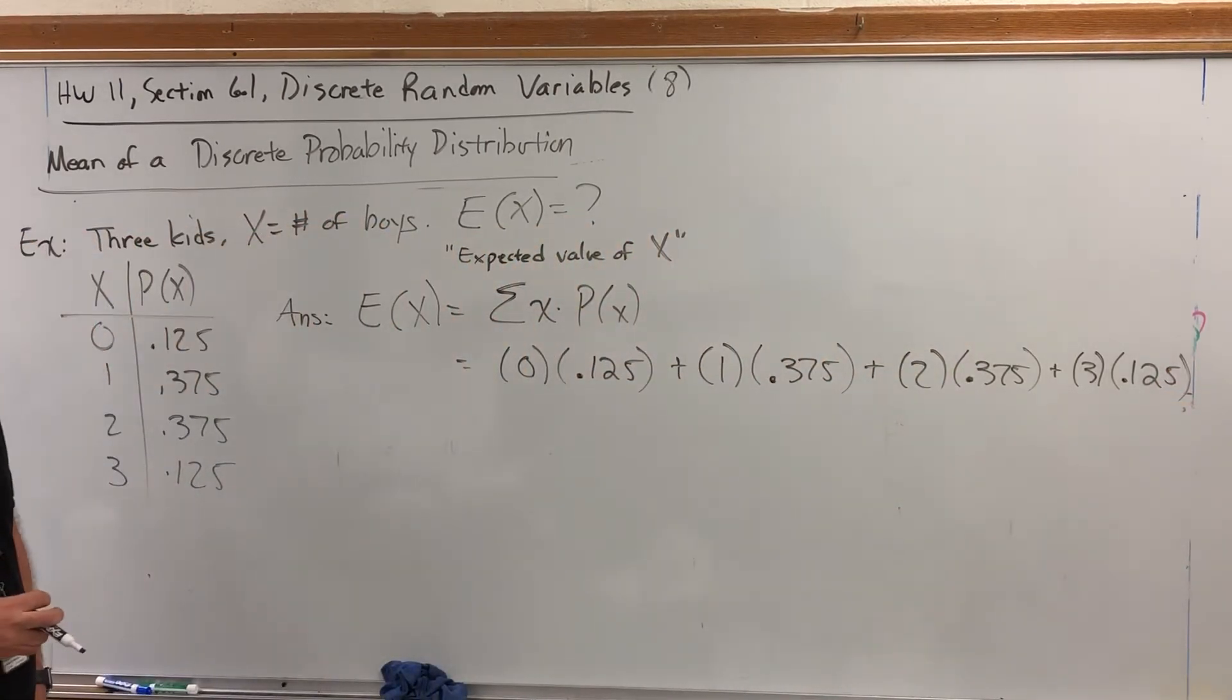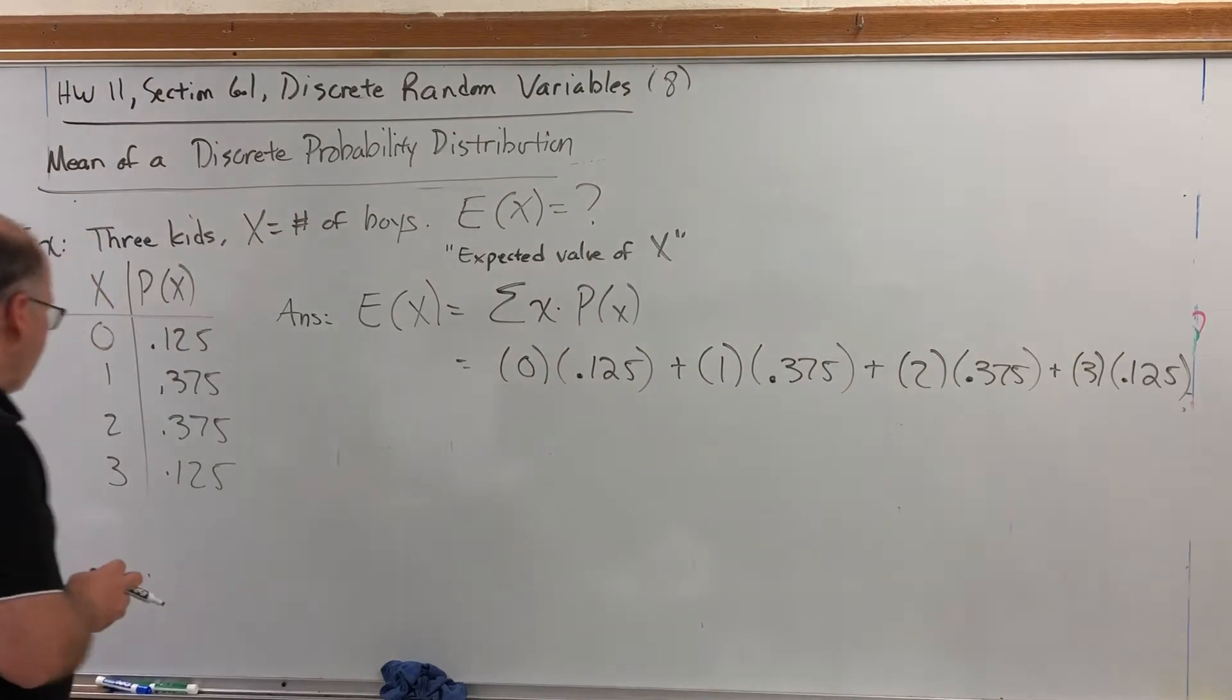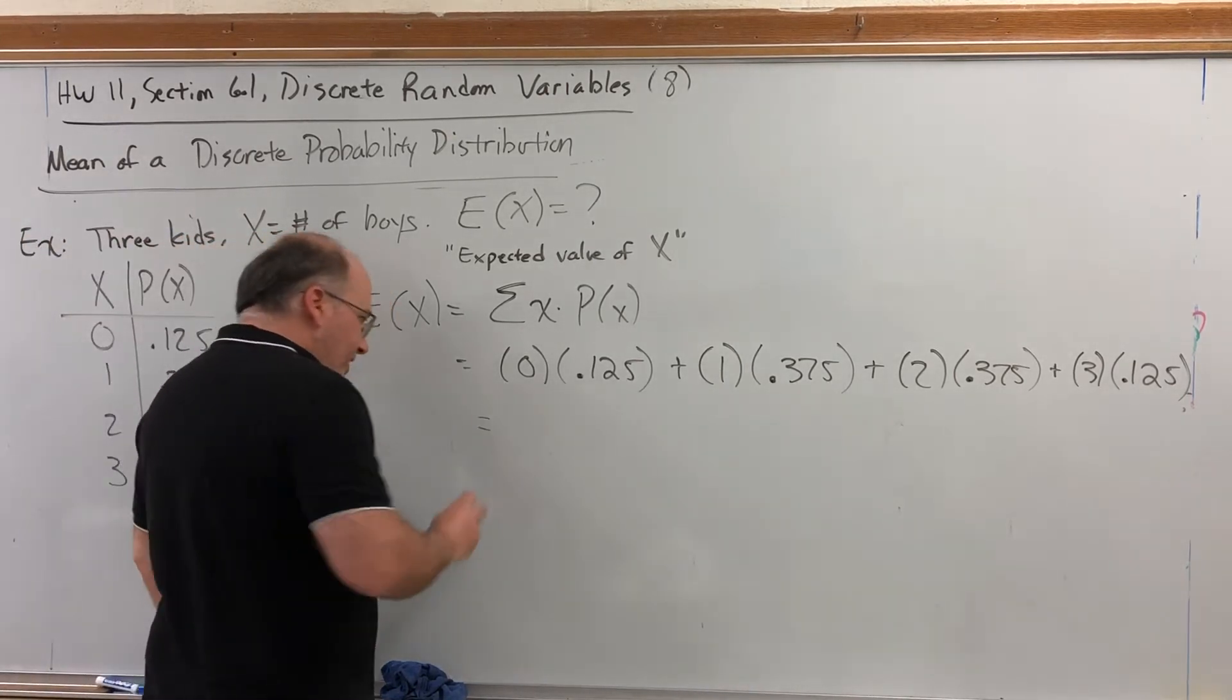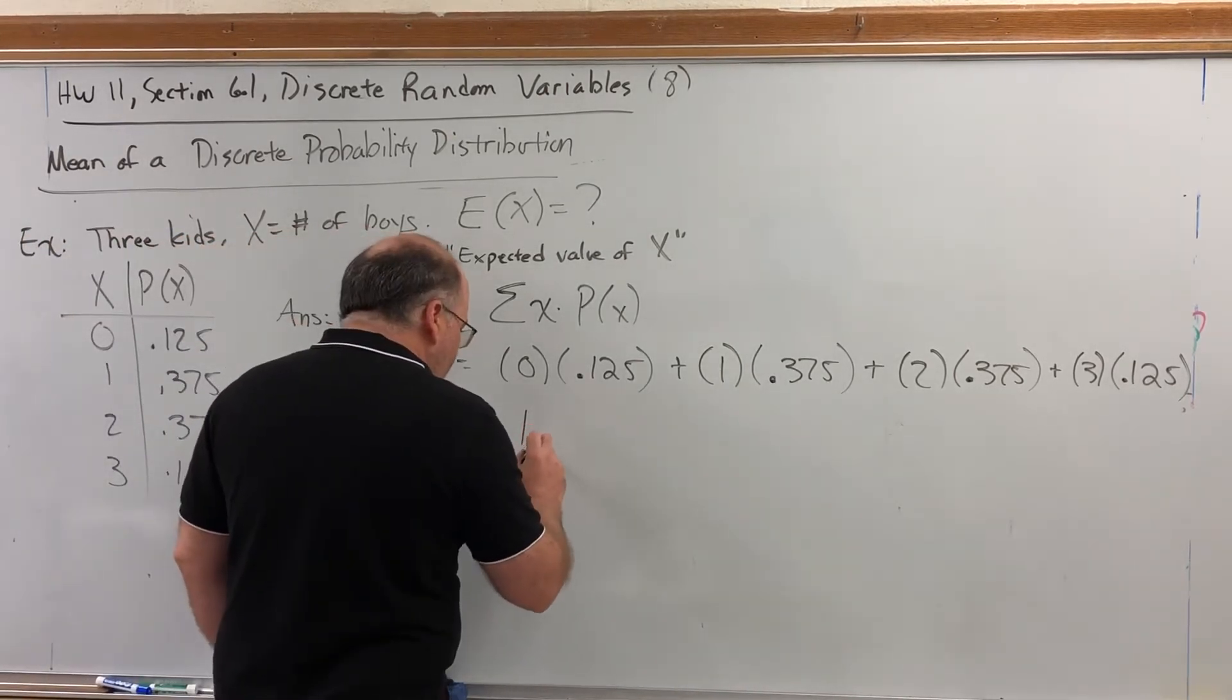So, we just have to add all this up. I think I can do this one fairly quickly, if you give me just a moment. Three, and six is nine, and three is 12 out of eight. Yep, it's going to end up being exactly 1.5.